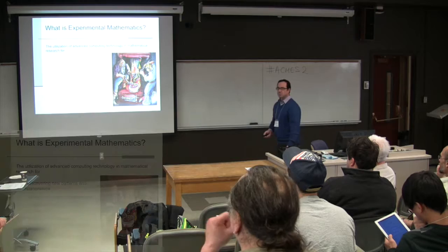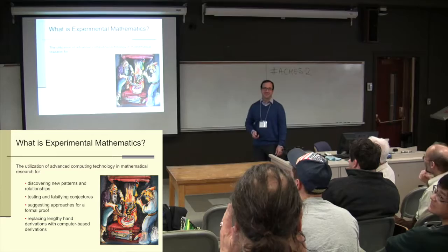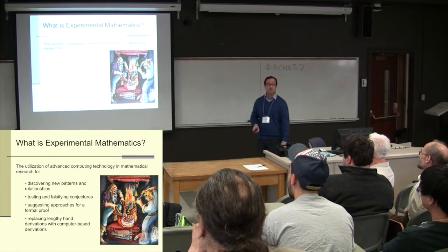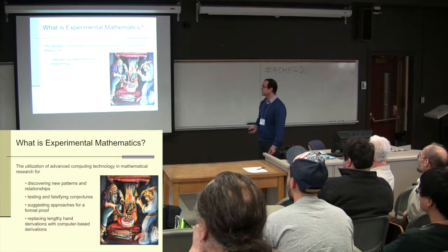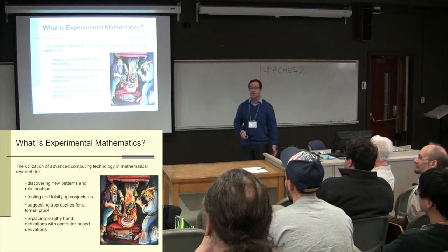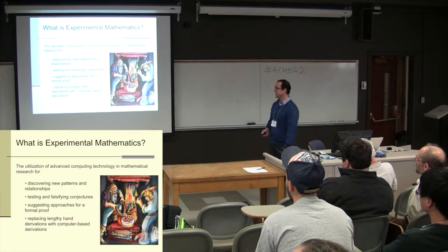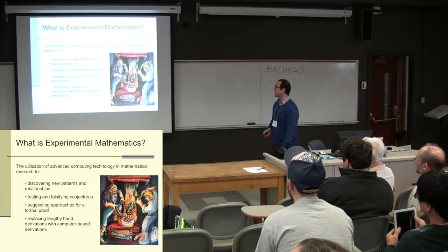So what is experimental math? We're using — usually computers, but not exclusively — advanced technology to do things like find patterns and relationships in mathematical structures, testing and falsifying conjectures, and suggesting approaches for informal proof. Most people think of computers as mainly just replacing hand calculations, but I want to emphasize it's a new way of thinking. It's not just an extra sidekick to doing traditional research.